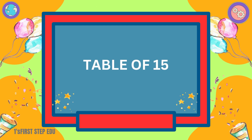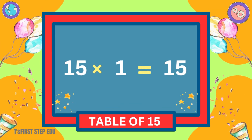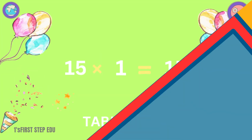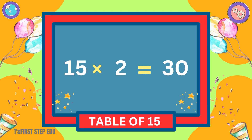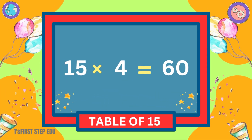Table of 15. 15 ones are 15. 15 twos are 30. 15 threes are 45. 15 fours are 60.